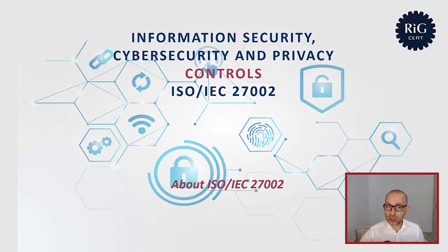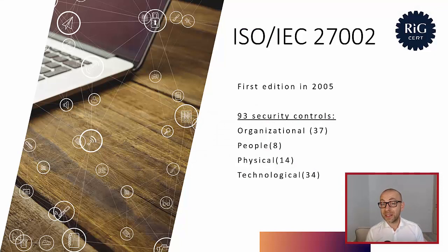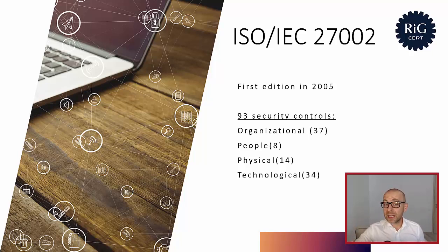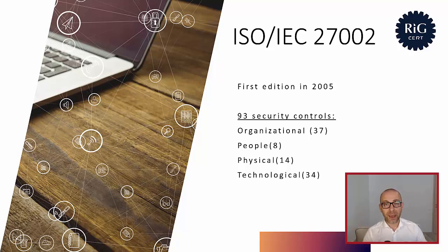This is not the first edition of this standard — it is the third one. The first edition of ISO 27002 was published in 2005, then the standard was revised and a new edition came out in 2013. As this online course is being created, the third edition has not been published yet; the final draft is being used, and it is expected that in the first part of 2022 we will have the new edition of ISO 27002 published.